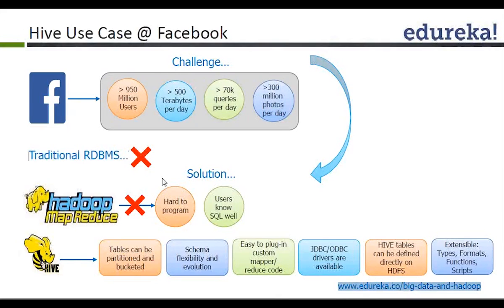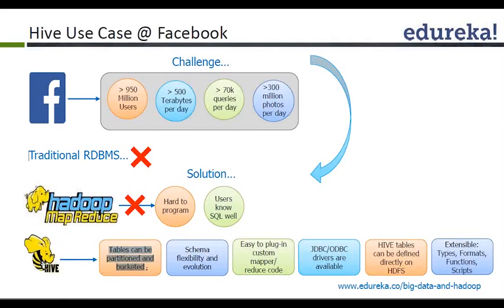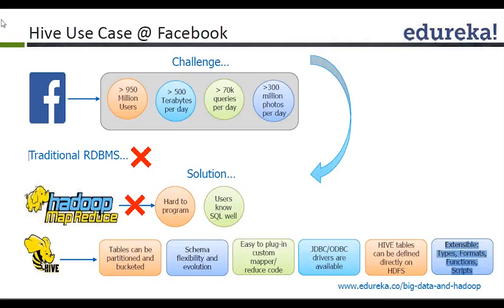Of course they couldn't use traditional RDBMS. The solution was MapReduce, but the challenge was that it was hard to program because it was Java-based, and they had people who knew SQL very well. That's why they developed Hive. In Hive, tables can be partitioned and bucketed. Schema flexibility and evolution is there — schema on read — you can plug in custom mapper and driver code, JDBC and ODBC drivers are readily available, you can define Hive tables directly on data in HDFS, and it is extensible with custom types, formats, and functions. Most data in the market is still structured data, so you would see Hive being used for more than 60–65% of projects, then PIG, then MapReduce.